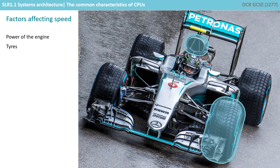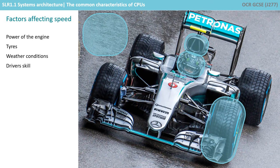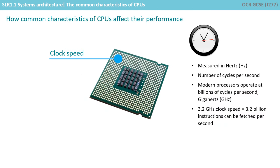So what else have we got? Well, we've got the tyres, which will have a big overall impact on the speed of our racing car. We've got the weather conditions, the driver's overall skill, and the aerodynamics of the racing car. As you can see, there are lots of factors which determine the overall speed of a racing car in any particular race. In a similar way, the performance of the CPU is affected by various factors.